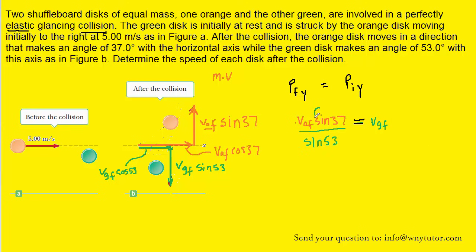And if you plug the sine of 37 divided by the sine of 53 on your calculator, you should get a result that is approximately equal to 0.754. So we can write V0F times 0.754, and that's going to equal the V sub GF term. Now we're going to just hang on to this result and use it in our next equation.